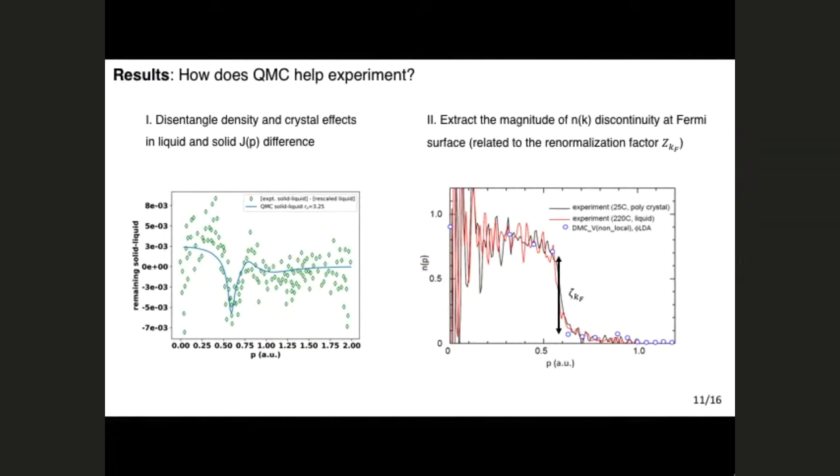But our experimental colleagues asked, why is this helpful to us? So here are two ways that I think our calculation has been able to help their data analysis. So firstly, we were able to disentangle the effect when they look at the Compton profile as a solid versus a liquid. The second thing we were able to do is calculate the magnitude of this jump, which is really hard to get from their experimental data alone. So I will go into more detail here.